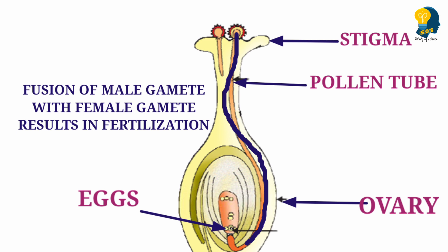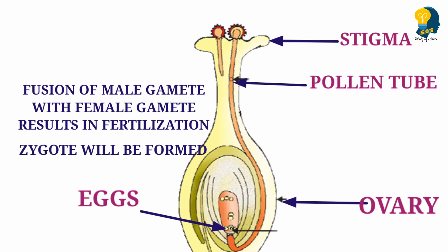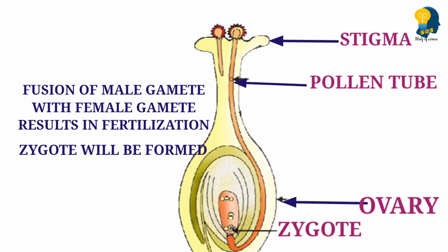As a result of fertilization, there is the formation of a zygote. What is a zygote? A zygote is a single-celled organism. There is the formation of a zygote as a result of the fusion of the male and female gamete. Also, one important thing to understand: a pollen grain contains two male gametes — two male sex cells.